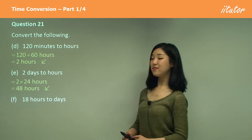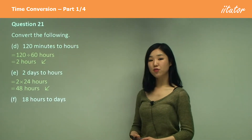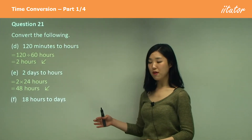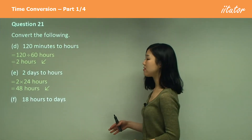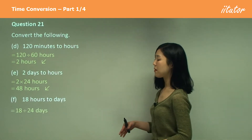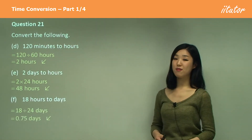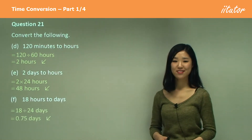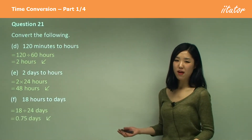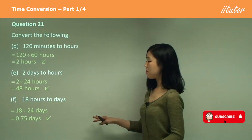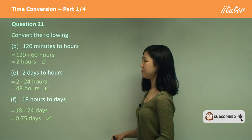F: 18 hours to days. Small to large, we must divide. So this time we divide by 24, which is 0.75 days. You can put it as a fraction if you like — doesn't really matter. That's the answer.